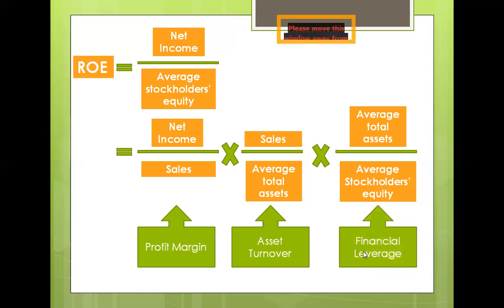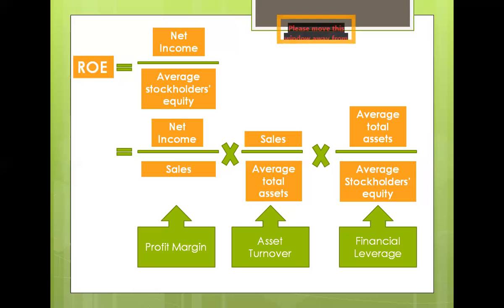The third component is financial leverage. Financial leverage measures the degree to which the company finances its assets with debt rather than equity. Increasing the percentage of debt relative to equity increases the financial leverage. Although financial leverage increases ROE when performance is positive, debt must be used with care as it increases the company's relative riskiness.